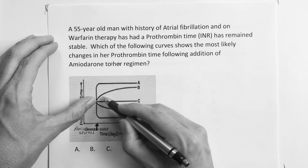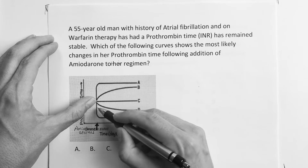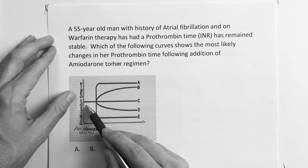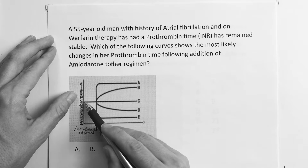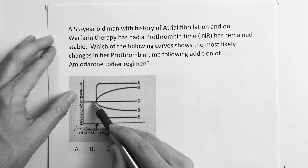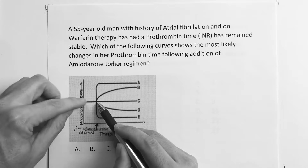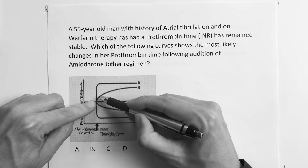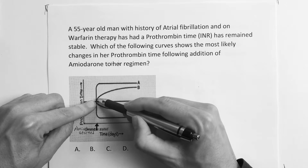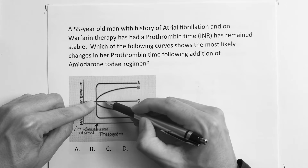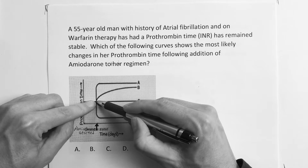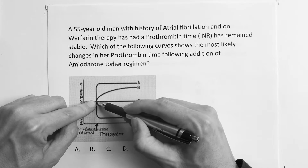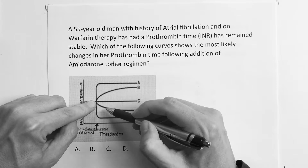All these different curves show changes in prothrombin time after amiodarone was added. The prothrombin time was steady, steady, steady — and then when amiodarone was added, it either went up, down, or stayed the same. So the question is asking which of these changes is the most likely outcome.